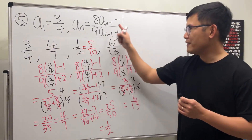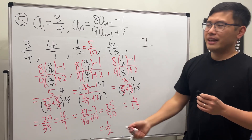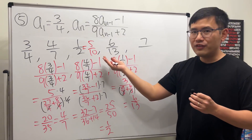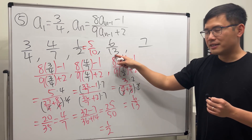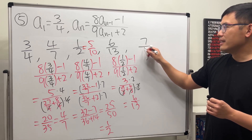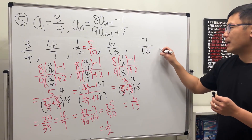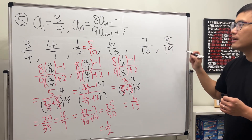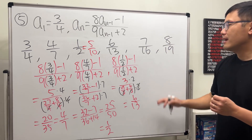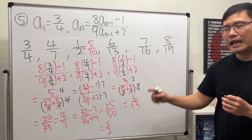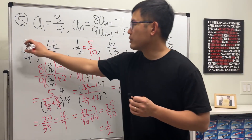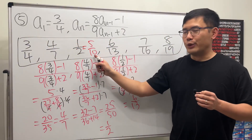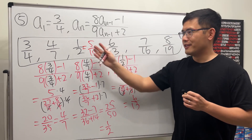So the pattern is clear: numerators are 3, 4, 5, 6, 7... and denominators are 4, 7, 10, 13, 16... adding 3 every time. That gives us 13, then 16, then the next term is 8/19, and so on. The trick is to rewrite 1/2 as 5/10 to reveal the pattern. That's it!